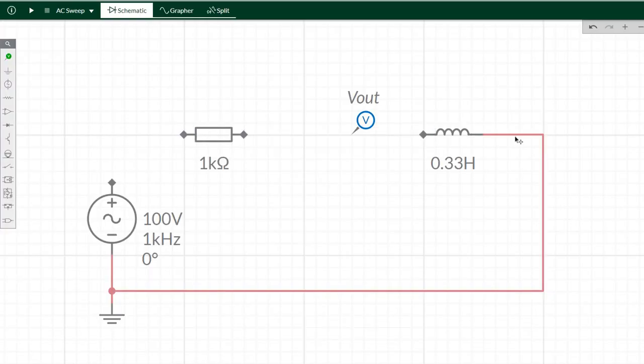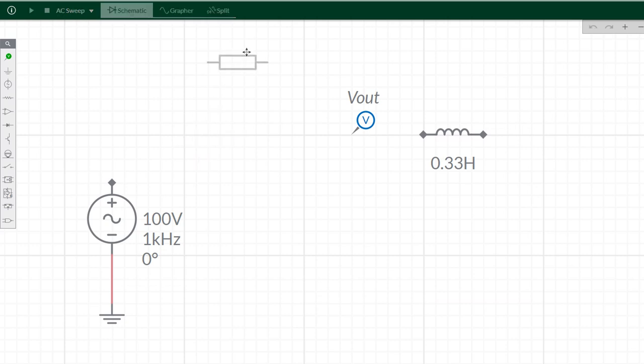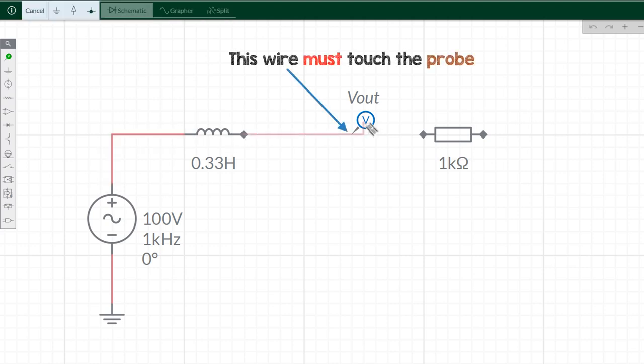For a low-pass filter, just swap the resistor and inductor around and do the interactive or do an AC sweep again. But the wire must touch the probe.